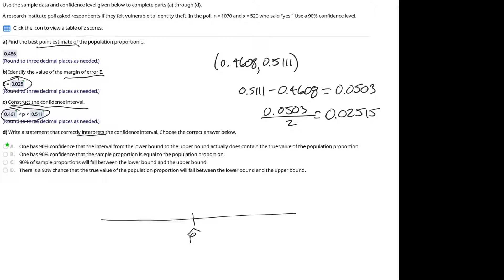Then we add the margin of error to that sample proportion in order to establish the right endpoint for the confidence interval. Then we subtract that same value in order to establish the left endpoint for the confidence interval.